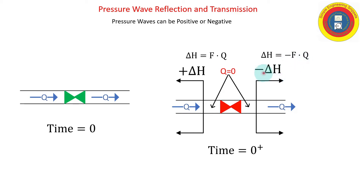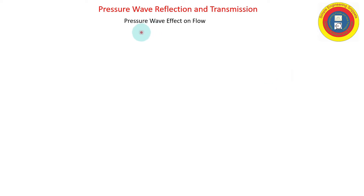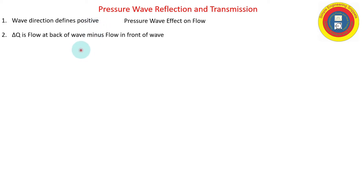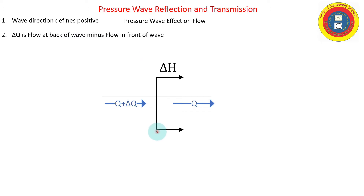The wave propagating downstream must be negative to bring the flow to zero. To avoid confusion, here are two simple rules: first, the wave direction defines positive; second, delta-q in the Joukowski equation is defined as the flow at the back of the wave minus the flow in front of the wave.